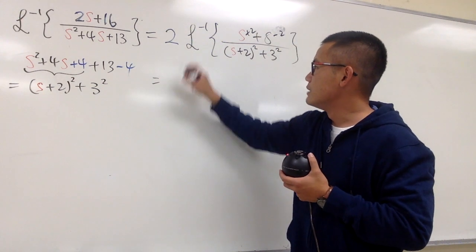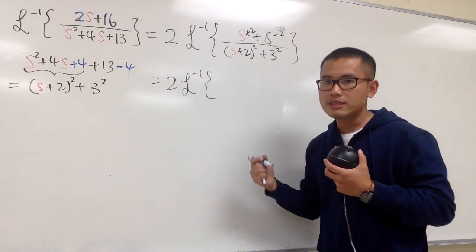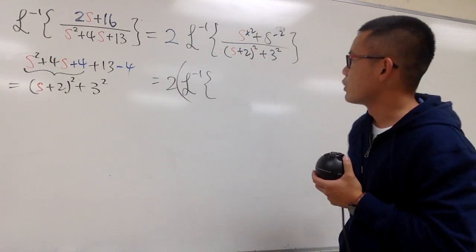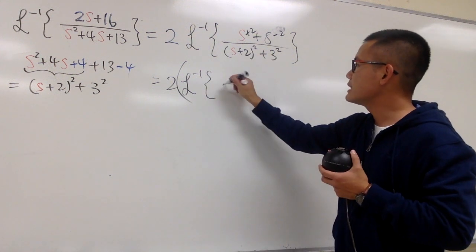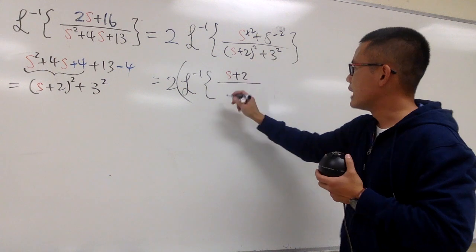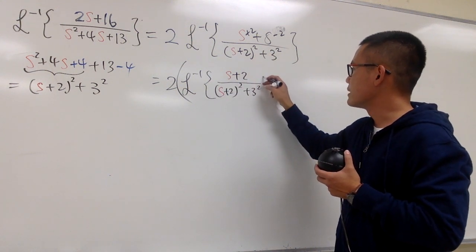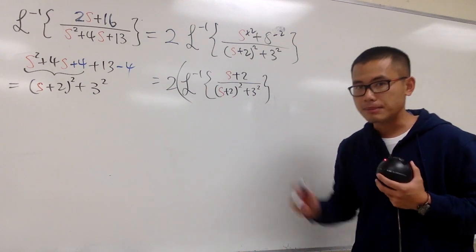So look at this now as 2 times the inverse Laplace transform. And let me just separate the fractions as well. I will put a big parenthesis around this. First, I will have s plus 2 over the denominator, which is s plus 2, square, and then plus 3 square, like this.